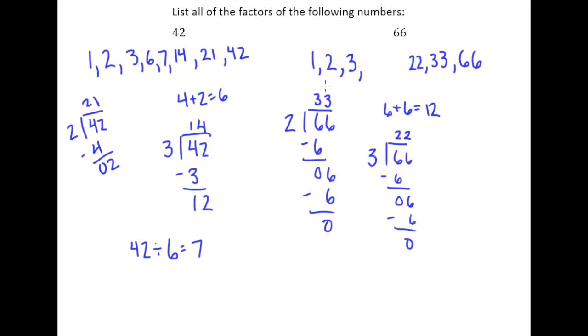4, once again, 4 doesn't work because 33 is odd. And that's what we got after we divided by 2 once. 5 doesn't work because it doesn't end in a 5 or 0. And so 6 definitely works.